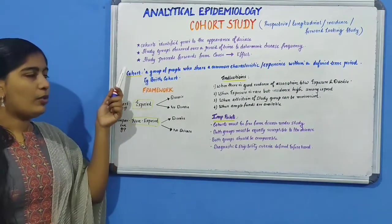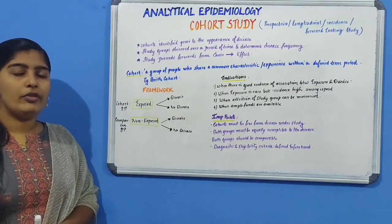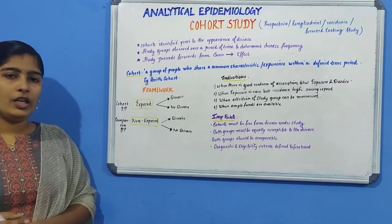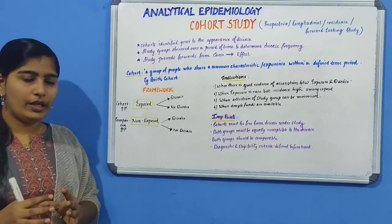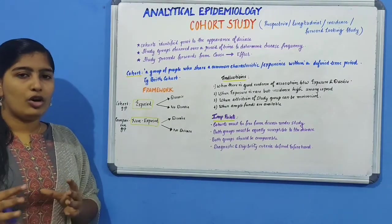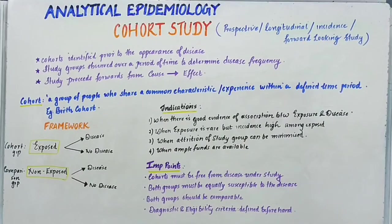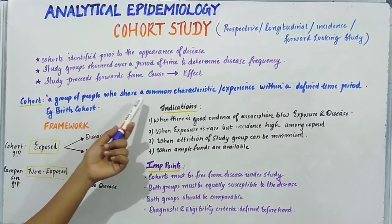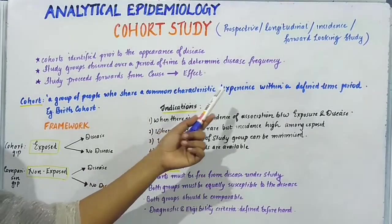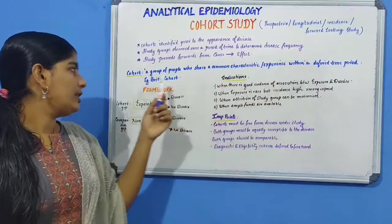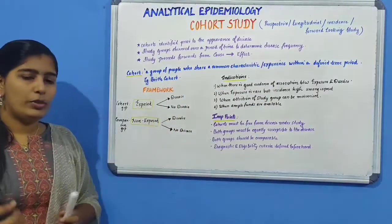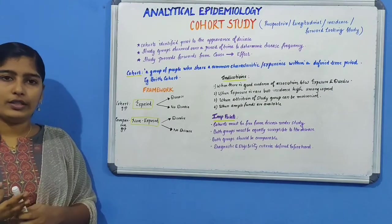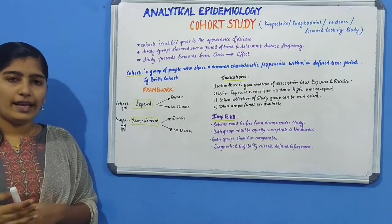We will see important points regarding cohort study. Before moving on to that, we must know what cohort means. Cohort is simply a group of people who share a common characteristic. Cohort can be defined as a group of people who share a common characteristic or experience within a defined time period. For example, it could be either age, occupation, or exposure to a particular drug or vaccine.